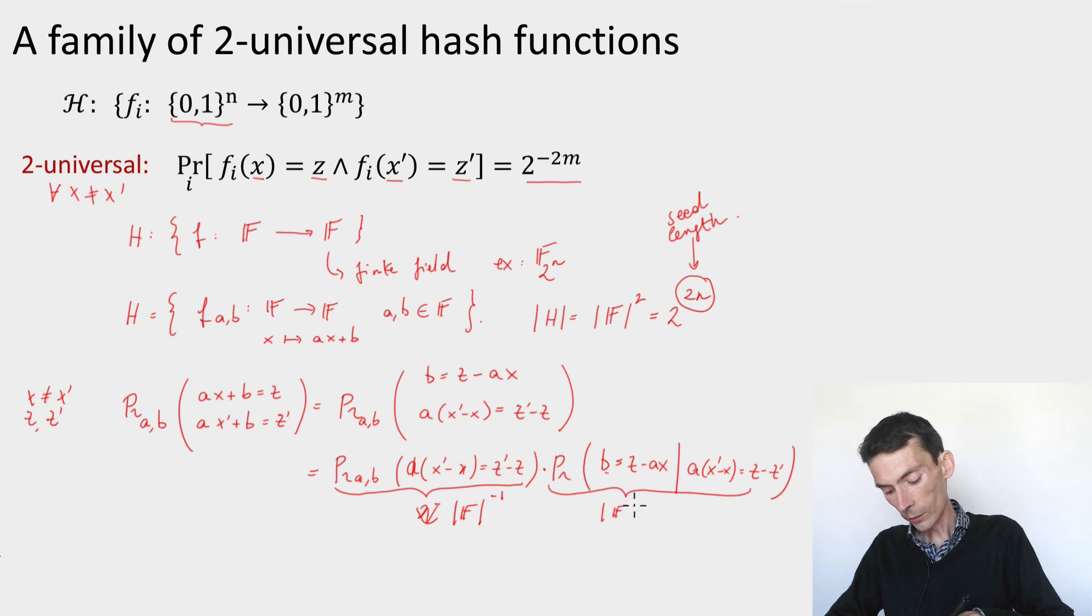In general, size of the finite field to the minus 1. So my probability is just size of the finite field to the minus 2, which is one over the size of the finite field squared, which since in the case of my hash functions here, the range is the finite field, I get exactly the probability that I wanted here.